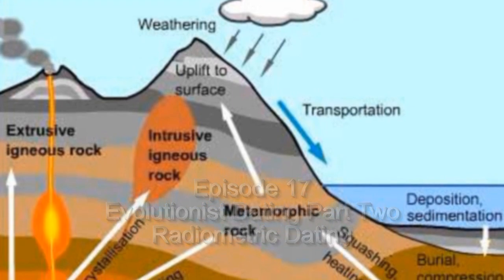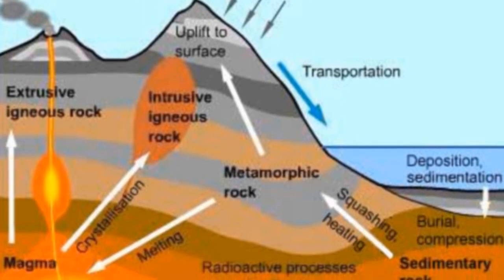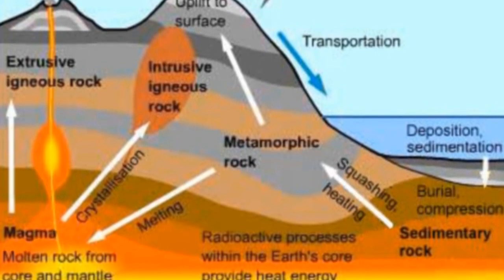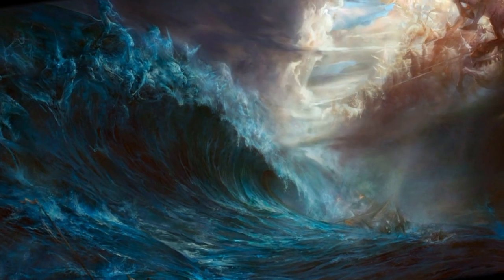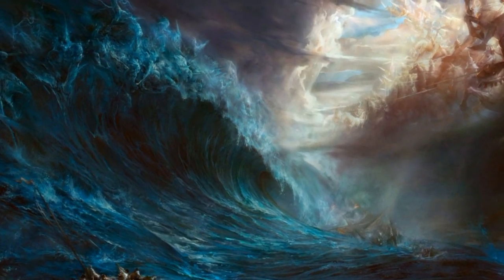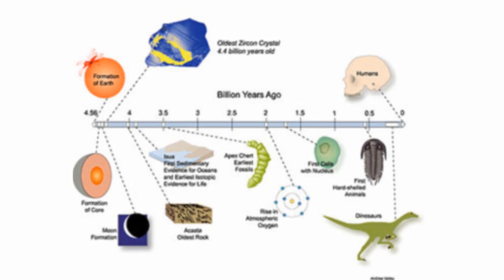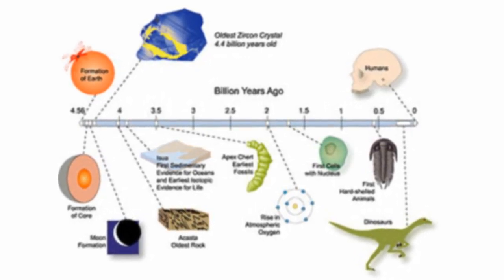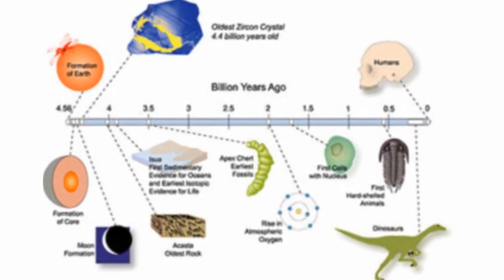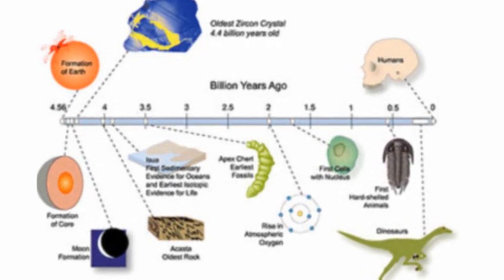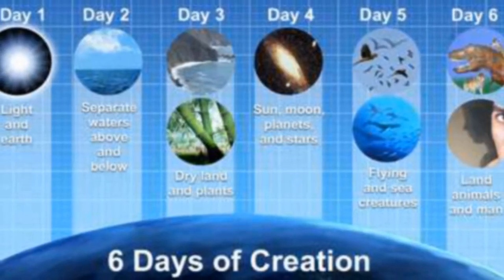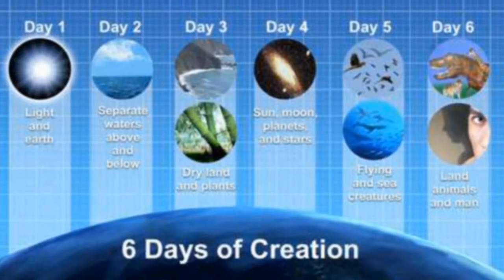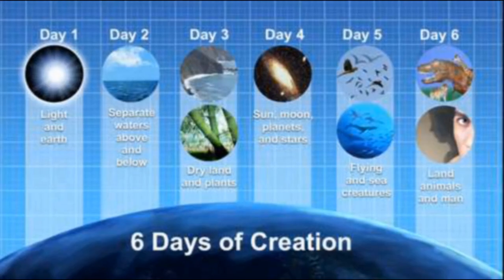As covered in the last episode, uniformitarianism appeared to be more effective in determining an accurate age for the Earth when compared to flood geology. Unfortunately for the evolutionists, the age of 300 million years is actually nowhere near the billions of years needed to account for the development of life from non-living material and the subsequent complexity of life.